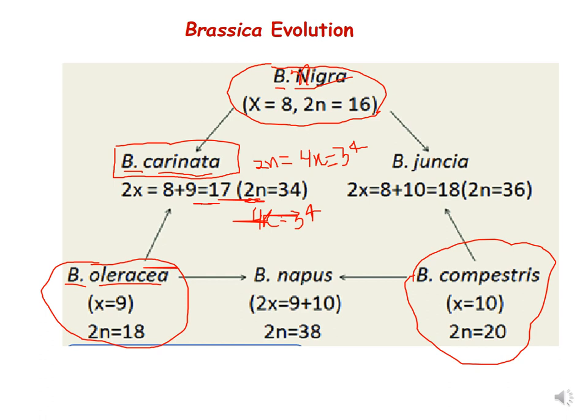The second cross took place between Brassica nigra and Brassica campestris. B. campestris has 20 chromosomes, so 10 chromosomes came from it, and B. nigra has 16, so 8 chromosomes came from it, giving a hybrid with 18 univalents — a sterile plant. When chromosome doubling took place, the 18 chromosomes doubled to 36, producing a fertile plant named Brassica juncea (spelled J-U-N-C-E-A).